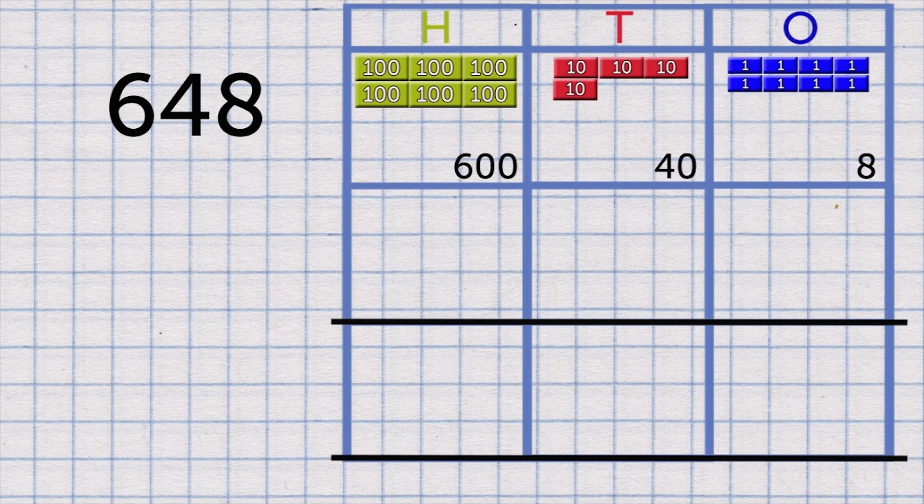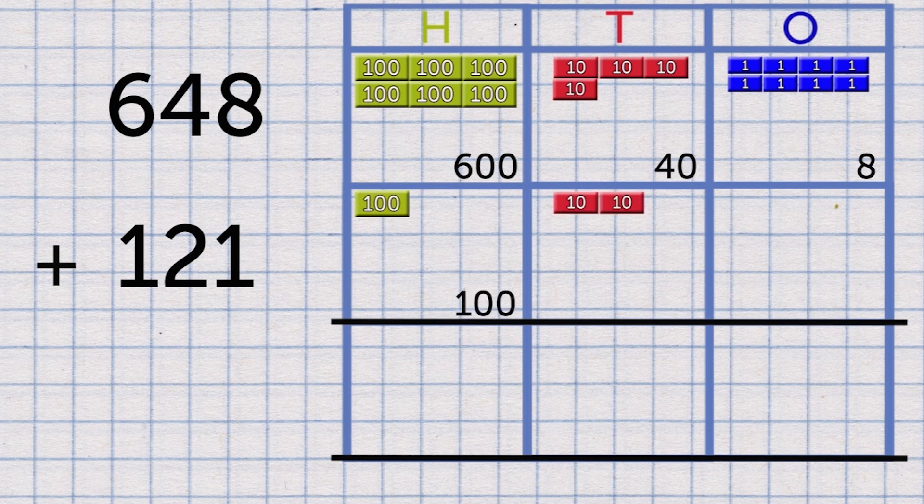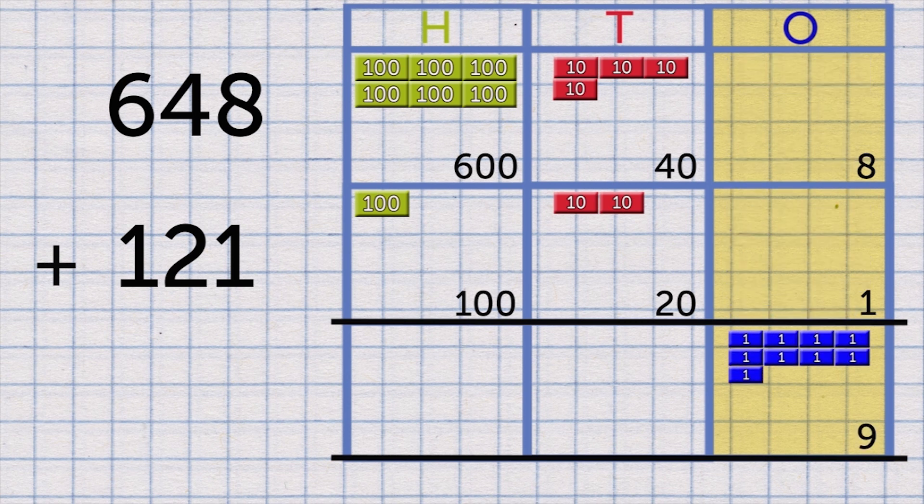Add the second number, 121. That's made from 1 hundred, 2 tens, and 1 one. Start by adding the ones together: 8 ones and 1 more make 9 ones.